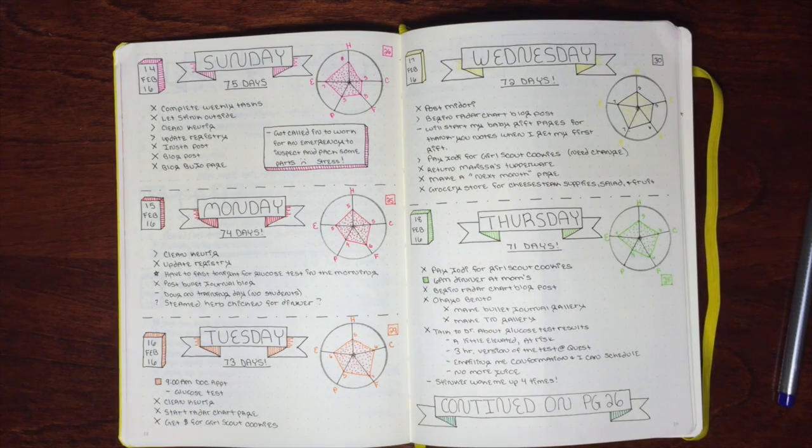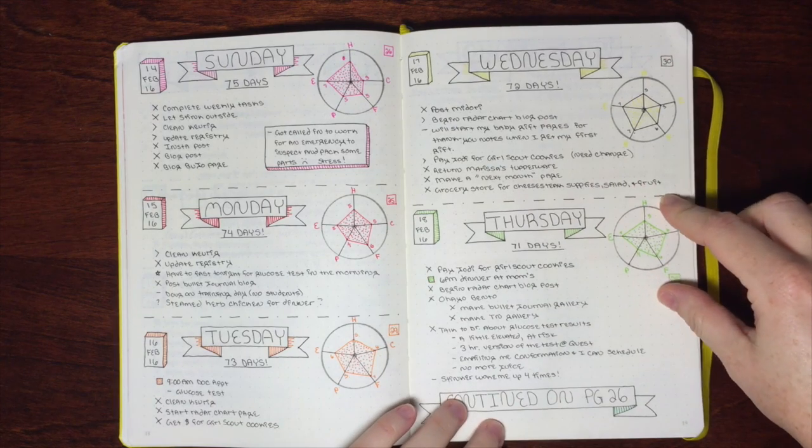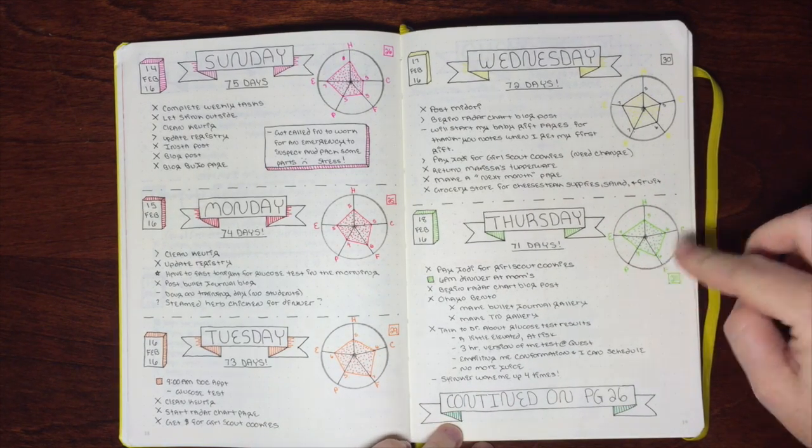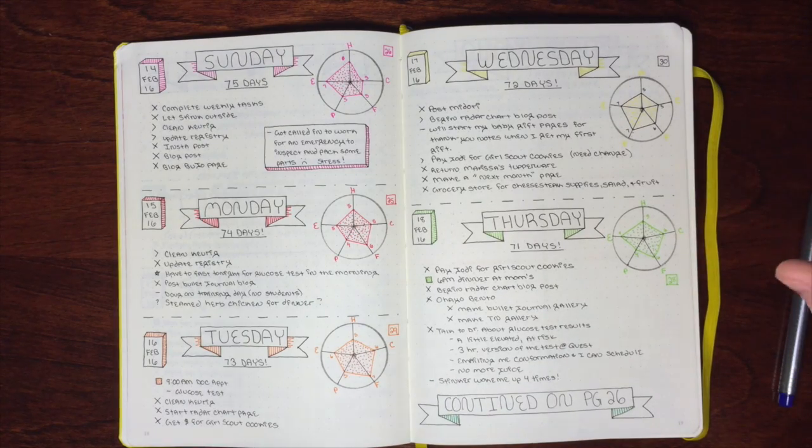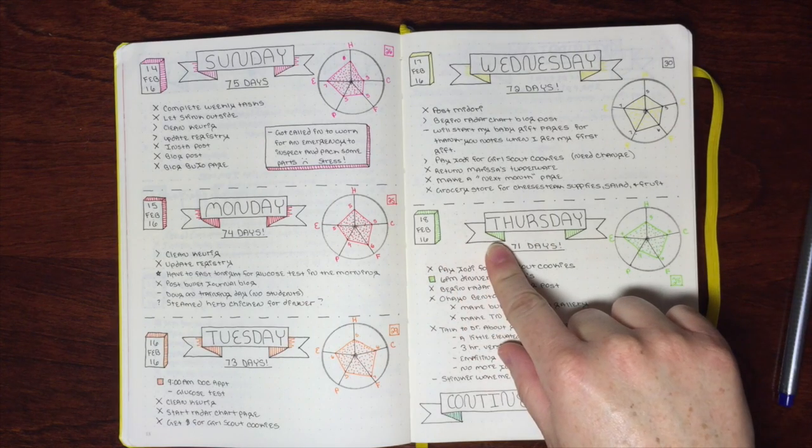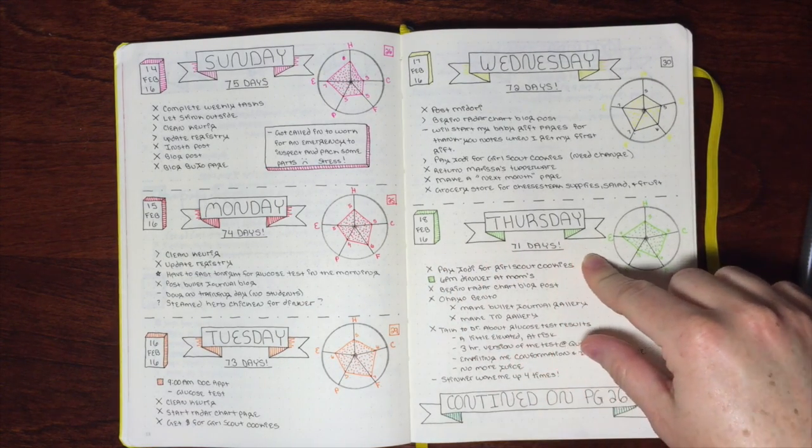Hi everybody, this is Heather from Ohio Bento. I've been getting a lot of questions about how I make these radar charts on my daily bullet journal, how to draw them in, and whether or not I use stencils or rulers or any other kind of guidelines for the banners and how that gets done.